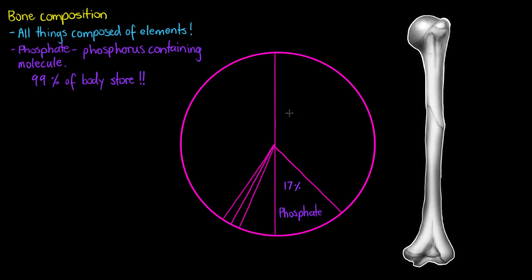The next thing we'll take a look at is all the organic molecules that we'll find in our bones, such as collagen. Now these molecules are needed to give the bone its strength and flexibility. Once again going over to our pie chart, we'll see that around 33% is organic molecules.